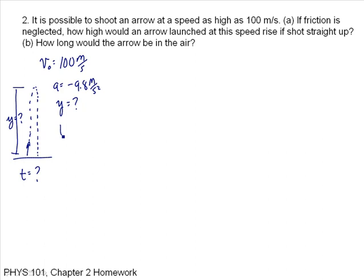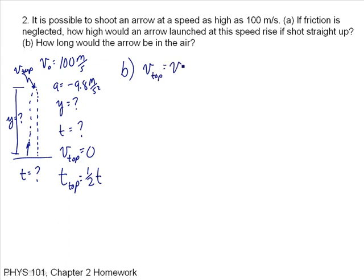I want to know Y and T. The velocity at the top is equal to zero — the arrow goes up, its speed decreases to zero at the top, then it turns around and comes back down with increasing speed. The time at the top is equal to one-half of the total time, because the acceleration is the same in both directions. My first step is to find the time, and when you face questions like this where you don't have the time, that's almost always the first thing you need to find. To find the time, I use V at the top equals V-naught plus the acceleration due to gravity times time at the top.